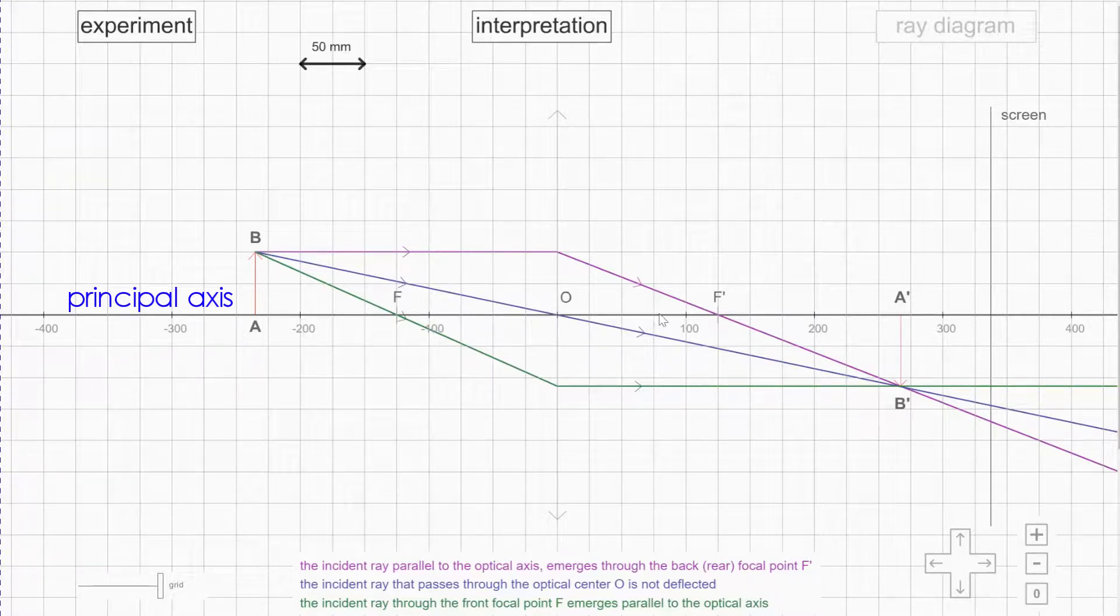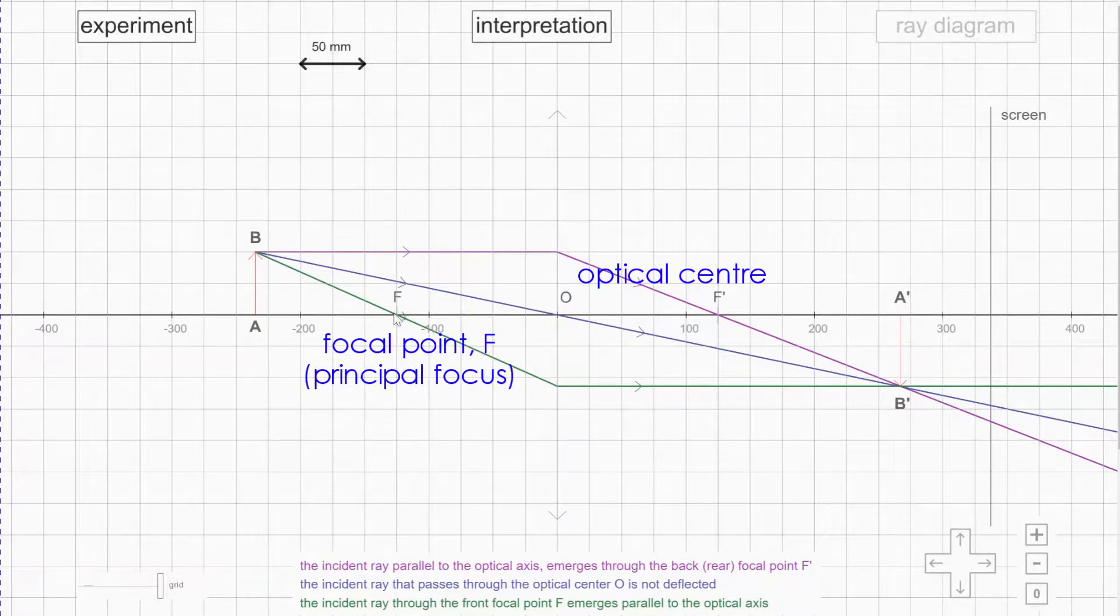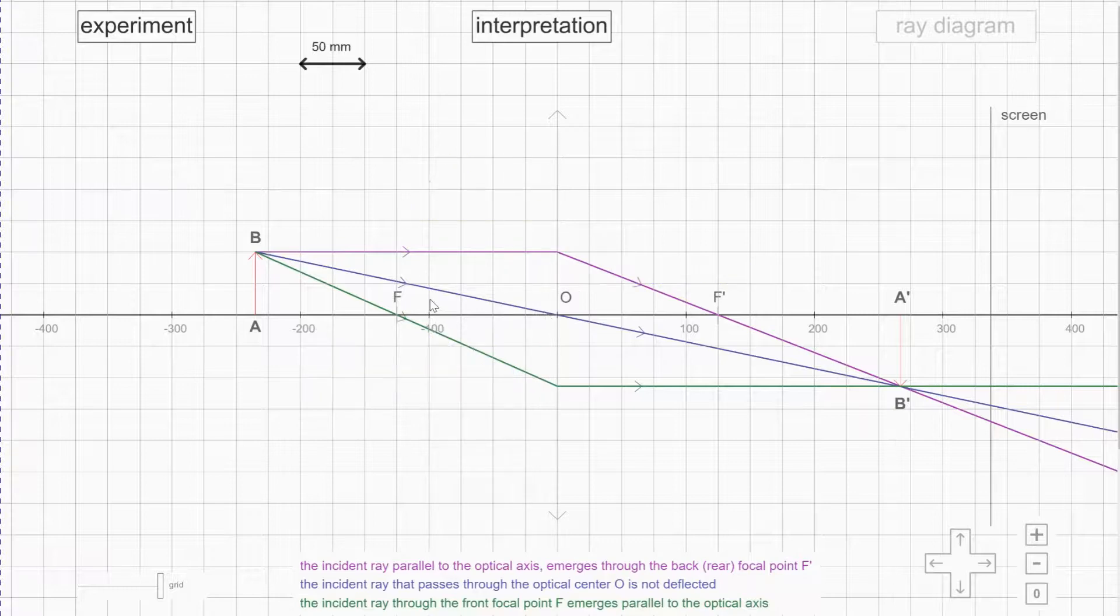This horizontal black color line will be known as the principal axis, and the converging lens here, also known as convex lens. This is the center of the lens known as optical center, and this point here F is known as focal point for this lens. And the distance from optical center to the focal point, that distance will be known as the focal length of this lens. So what's the focal length for this case?